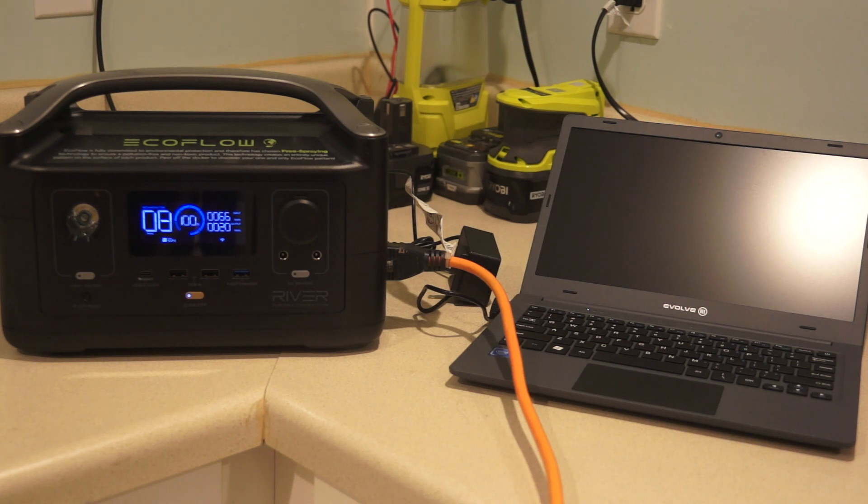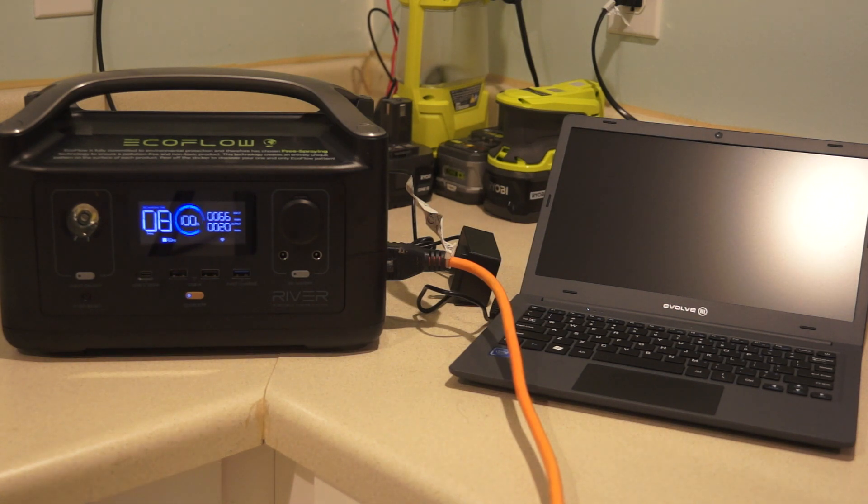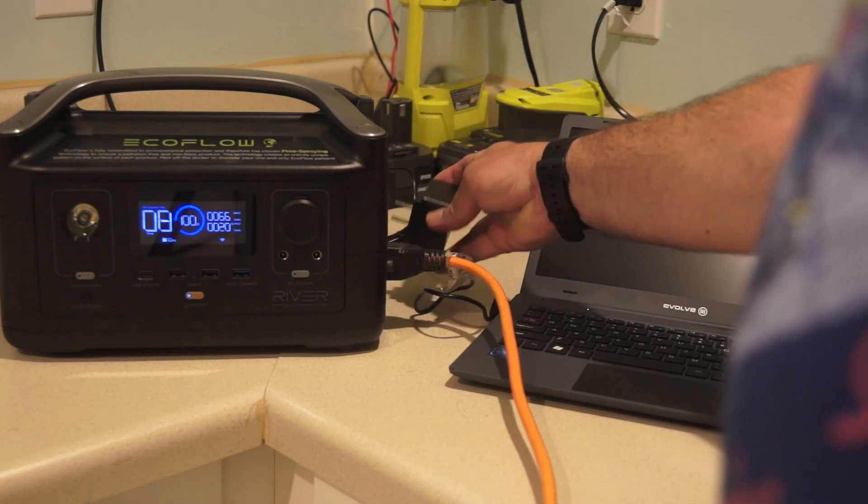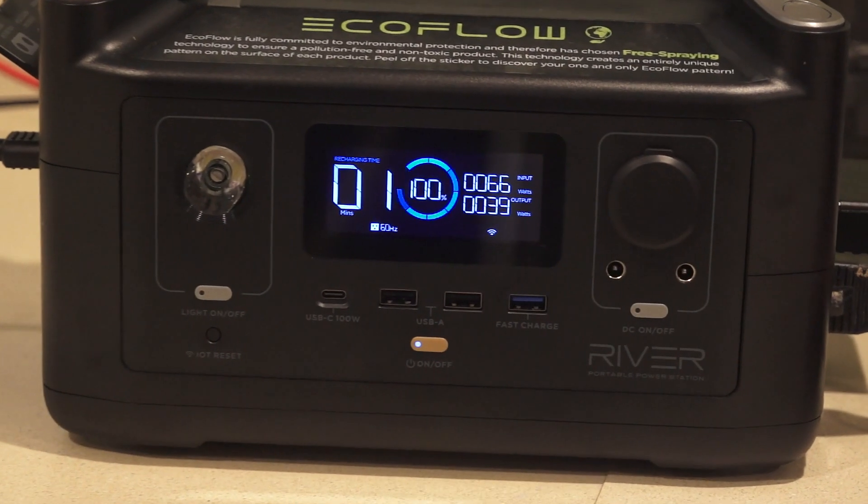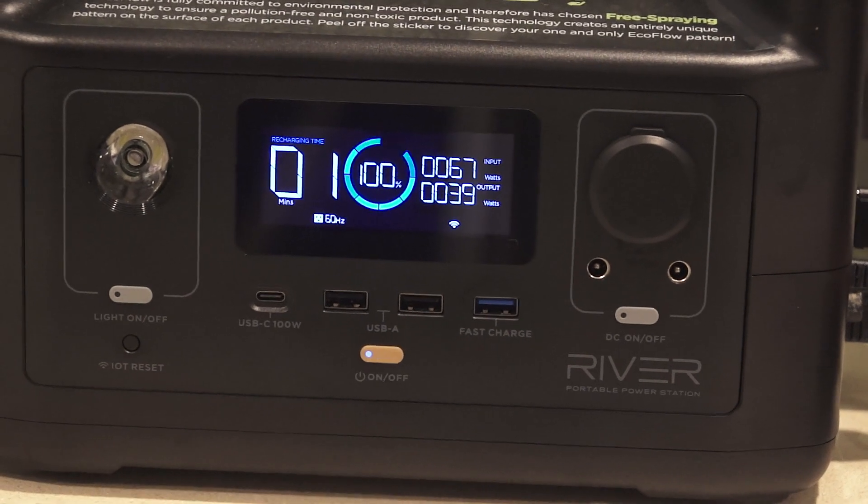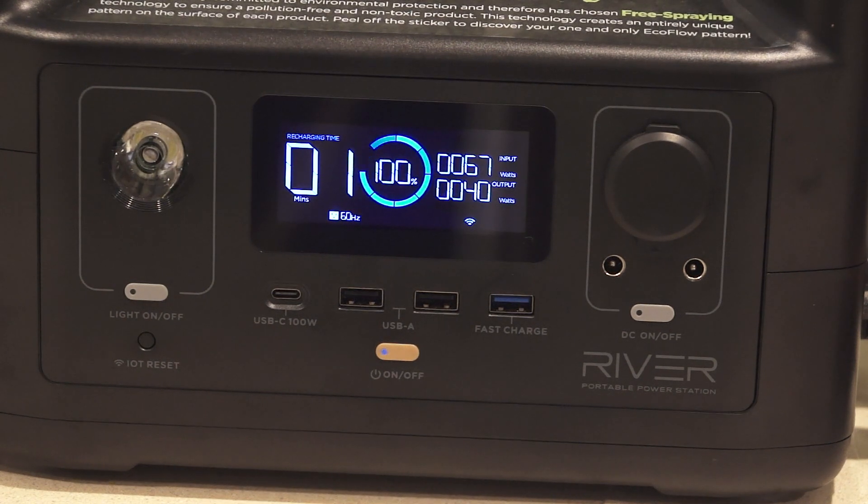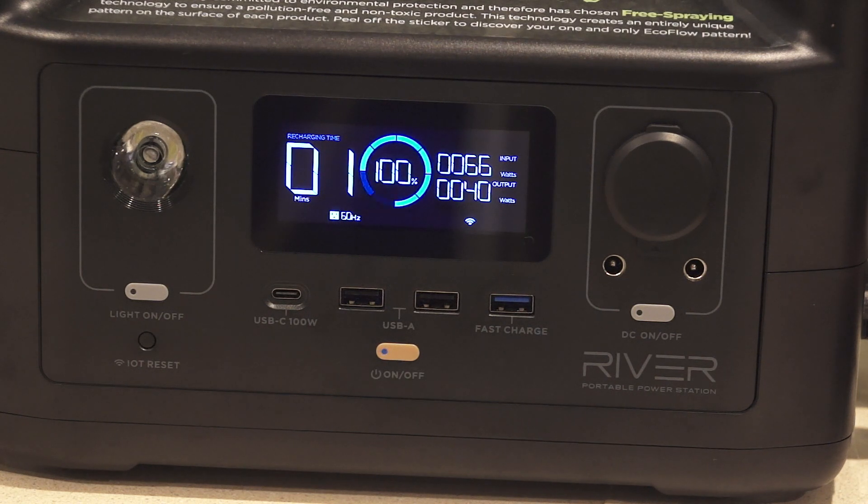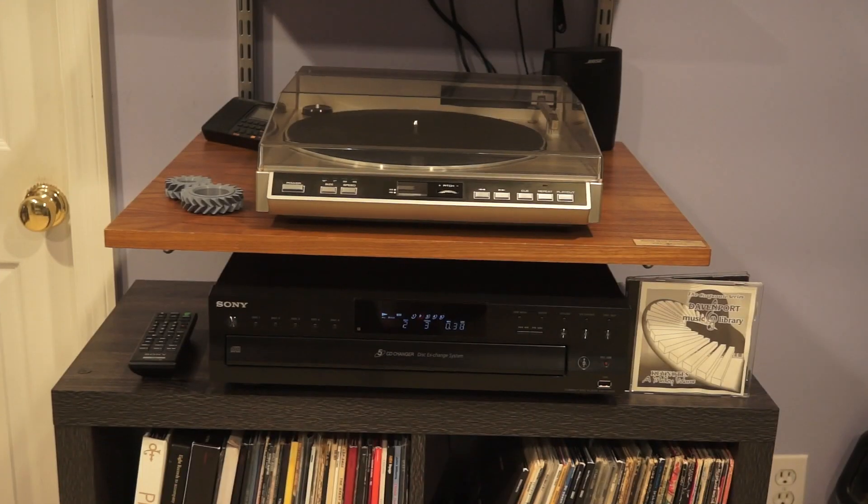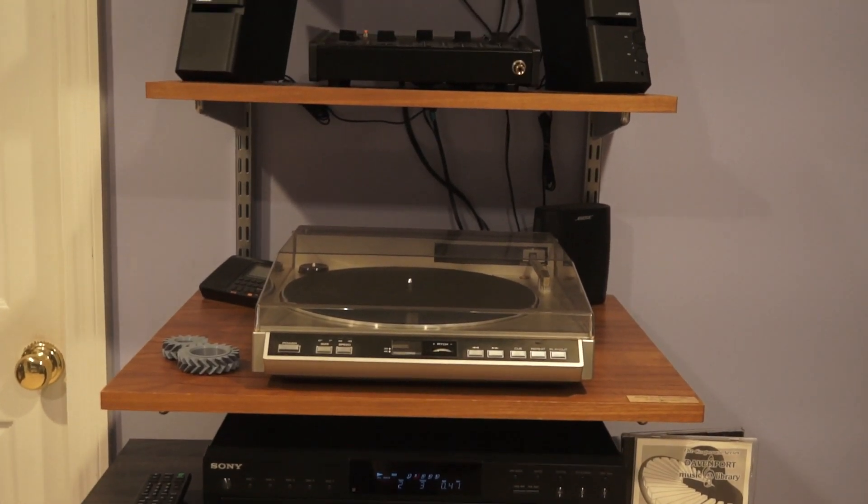And we are now running the CD player, the speakers, and the mixer, and you can see that we're using 20 watts from that. The solar is doing most of this, and we're still at 100 percent. Pulling in 67 watts from the solar panel, and we're using 40 watts, so we're at minus 26, 25 watts that could be used for something else, and here's our stereo system running off of solar. It's just incredible.